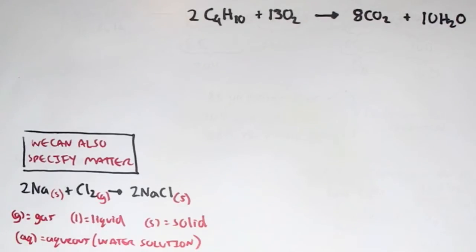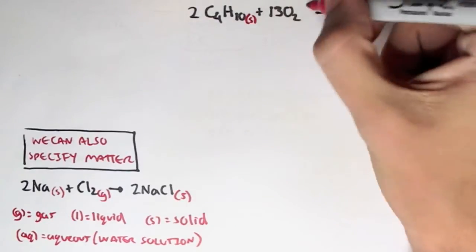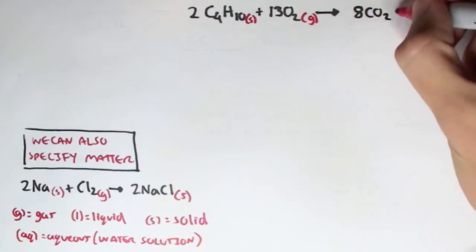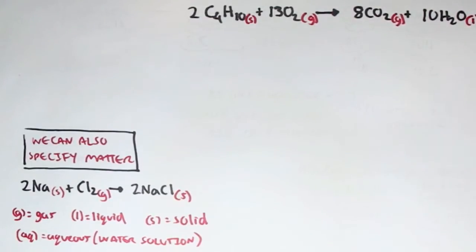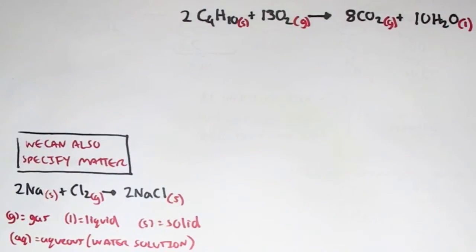Back to the stoichiometry example with butane: butane is typically a gas, so we write G. For oxygen gas, it's a gas, so we write G. For carbon dioxide, that's also a gas, so we write G. And for water, this is a liquid in this case, so we write L.